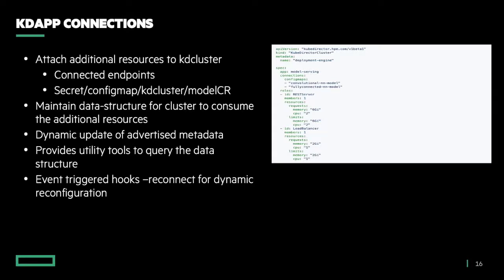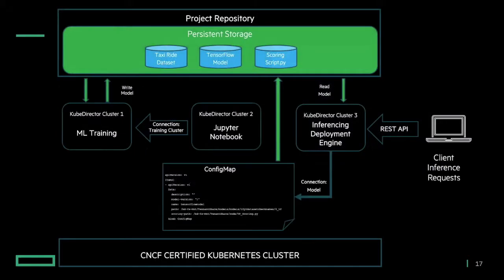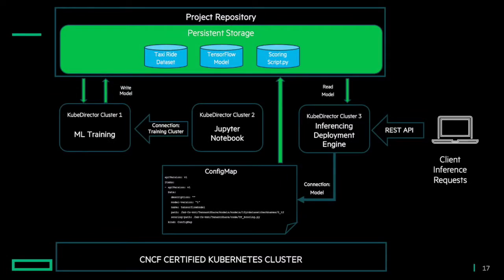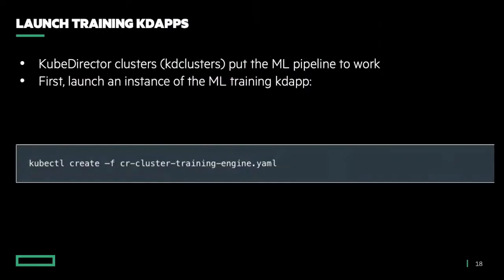Once we've launched all of our KubeDirector clusters, they will store their information in a persistent storage repository that each of the clusters will have access to, and they have access to each other via the connection. To create this pipeline, we take the KD apps defined in JSON format and create clusters that launch these KD apps as KD clusters. This is a simple kubectl create — basically just making an API POST to create another cluster using the YAML we've already defined for training. A simple kubectl create command with the YAML file, and you get your training cluster.